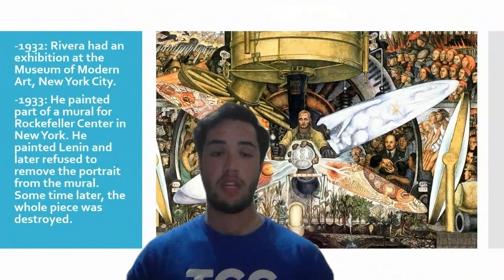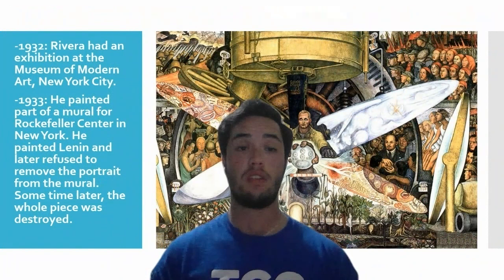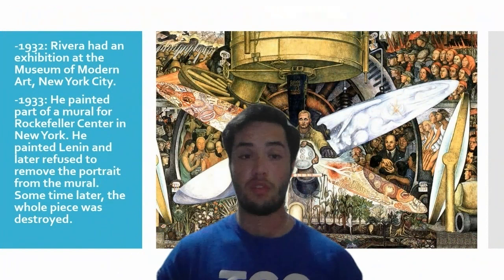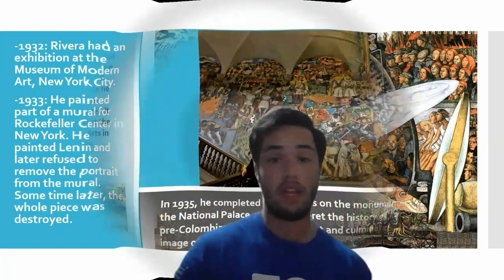In 1932 he had an exhibition at the Museum of Modern Art in New York City, and in 1933 he painted part of the mural at Rockefeller Center in New York. He painted Lenin and later refused to remove the portrait from the mural, so the whole piece was eventually destroyed. This reflects his communist beliefs.